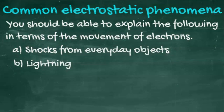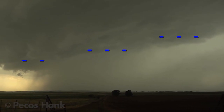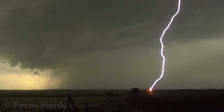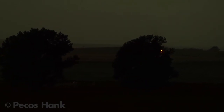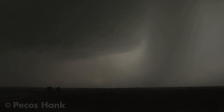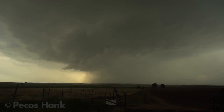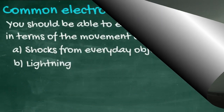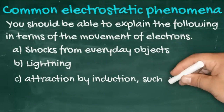Lightning is an electrostatic phenomenon. Small ice crystals circulating in thunderclouds build up a large electrostatic charge. The underside of these clouds becomes incredibly negatively charged. The clouds induce an opposite charge in the ground — or in this case, in the trees — and then a spark jumps from the cloud to the ground. And then there's the attraction due to an induced opposite charge.